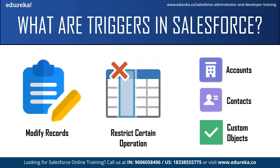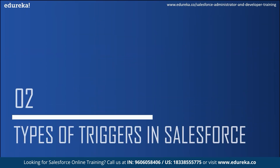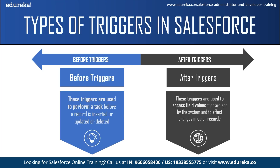Now let us move on to the next topic: the types of Salesforce triggers. Basically there are two types of triggers in Salesforce. The first one is the before trigger and the second one is the after trigger. As the name suggests, before triggers are used to perform a task before a record is inserted, updated, or deleted. These triggers are usually used to update or validate record values before they are saved to the database.